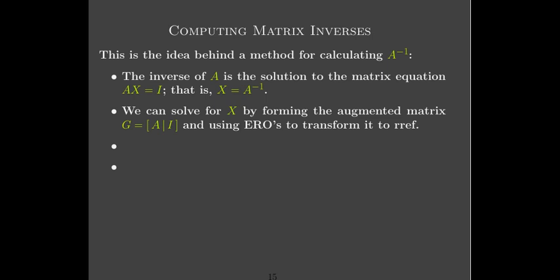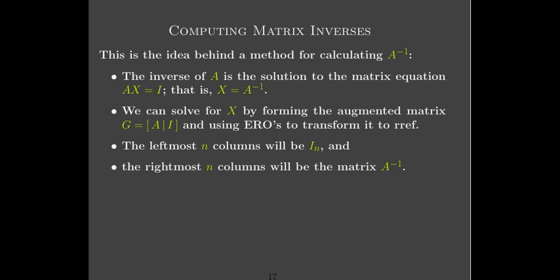So how will we solve for this matrix X? We'll form the augmented matrix with the coefficient matrix A on the left and the identity matrix as the right-hand side — an n-by-n coefficient matrix with n columns representing our right-hand side. Then we transform that to reduced row echelon form. When we're done, the RREF of an invertible matrix must be the identity matrix, and in place of the identity on the right, we'll have the solution matrix X, which is A inverse.